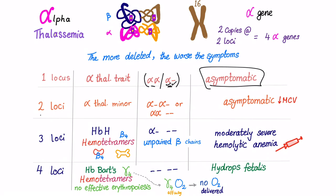What about if two loci are deleted? We call this alpha thalassemia minor. It can be either alpha negative alpha negative, or alpha alpha negative negative. What are the symptoms? Asymptomatic, maybe have very mild microcytic anemia, and of course microcytic anemia has low MCV.